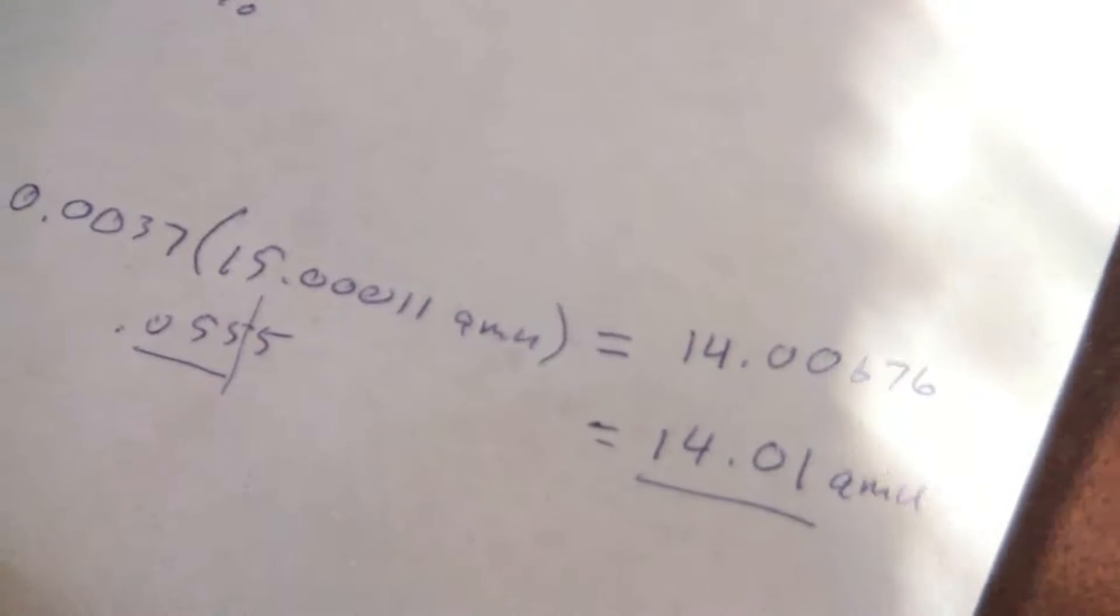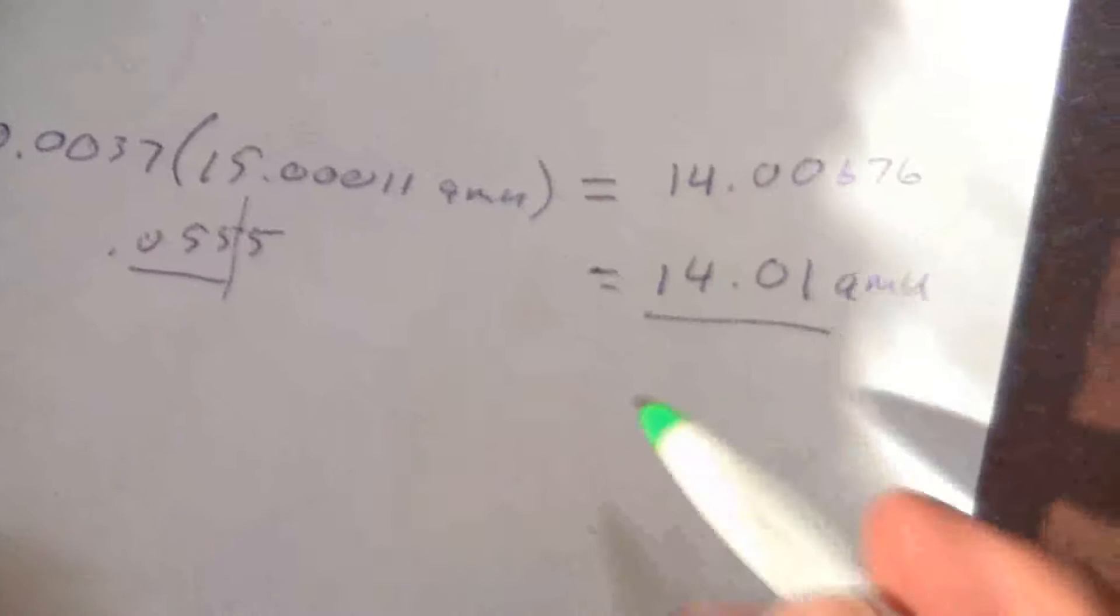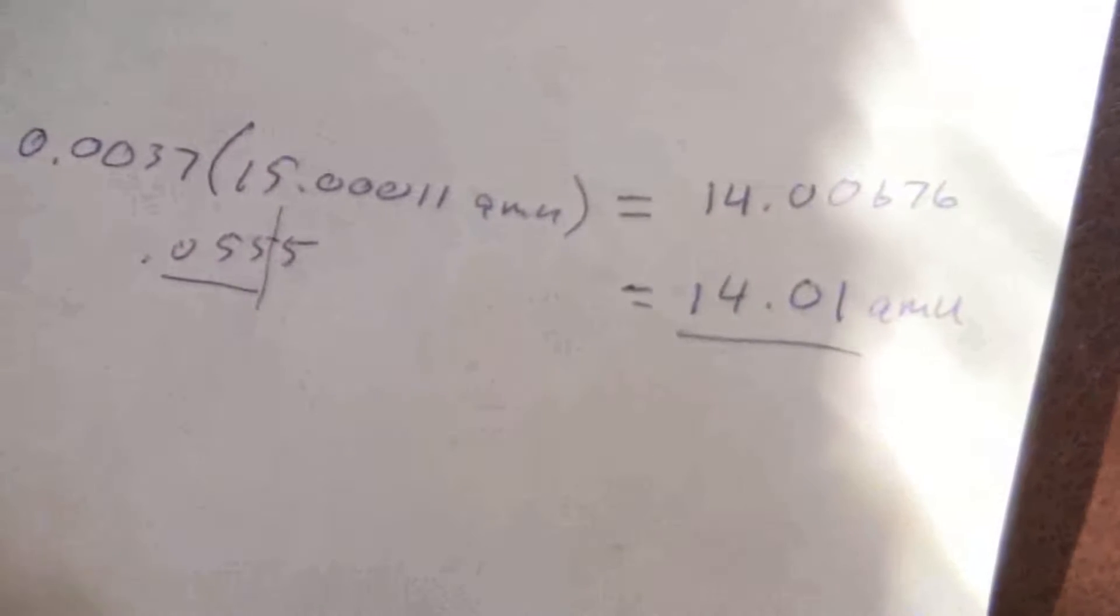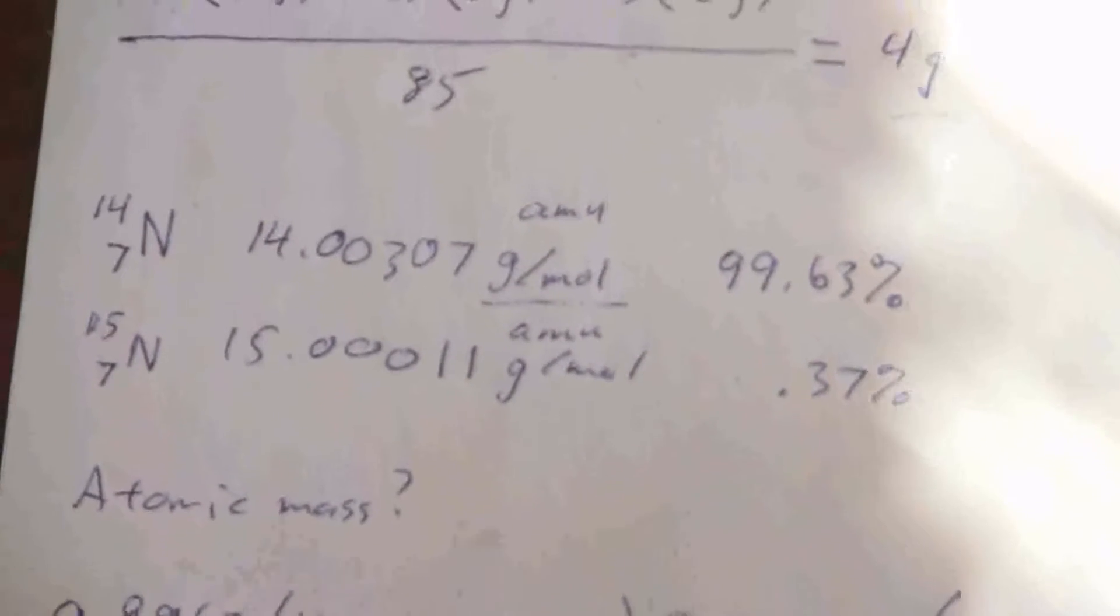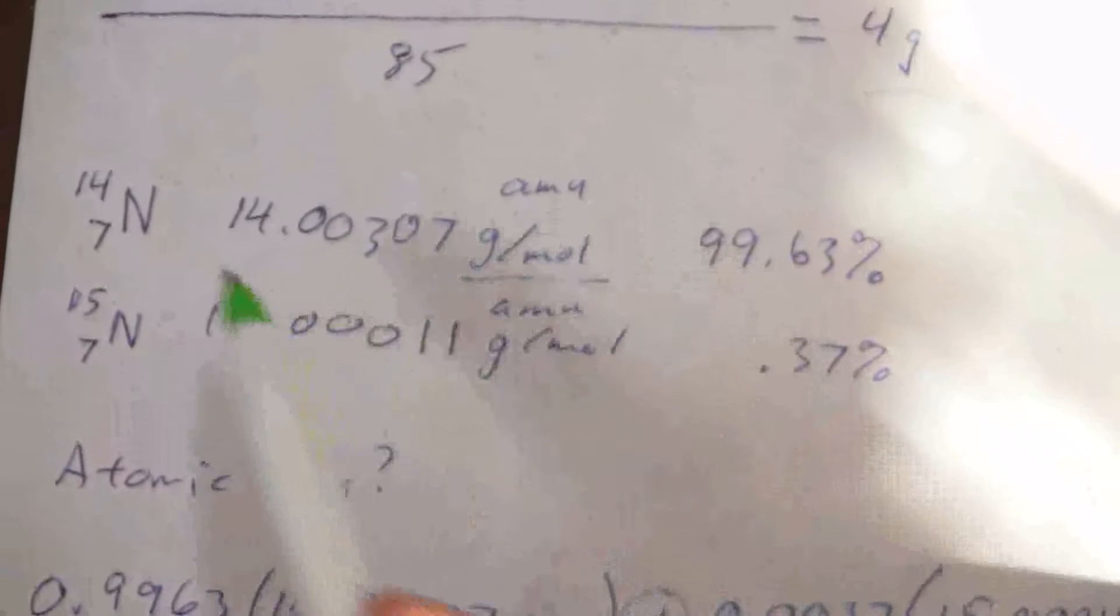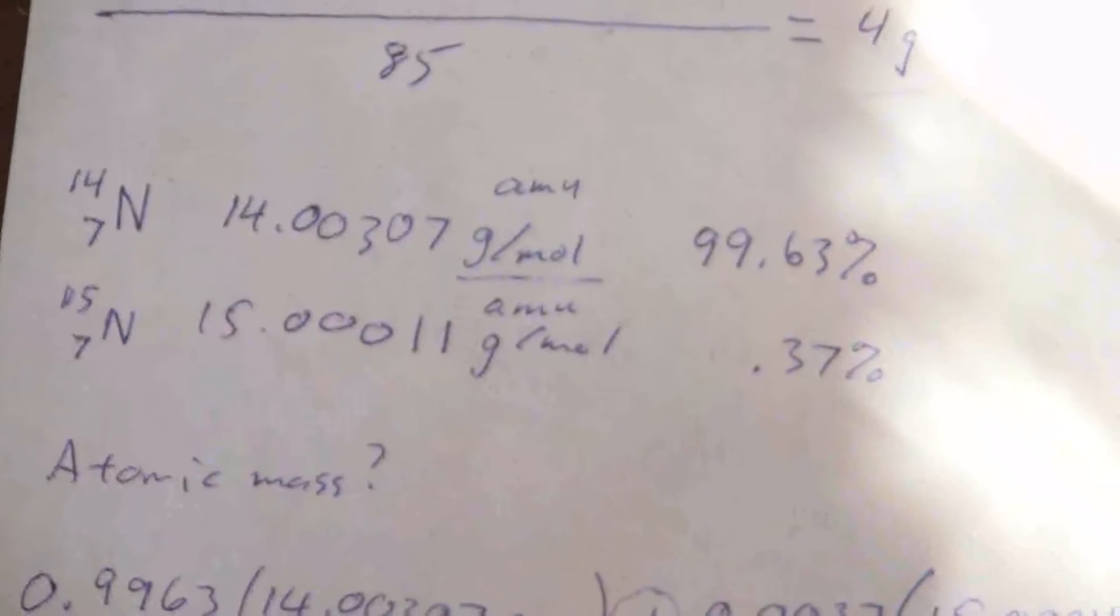And the value changes slightly. So anyway, that's how we calculate the atomic mass. It's just a simple weighted average of the weights for each individual isotope of an atom.